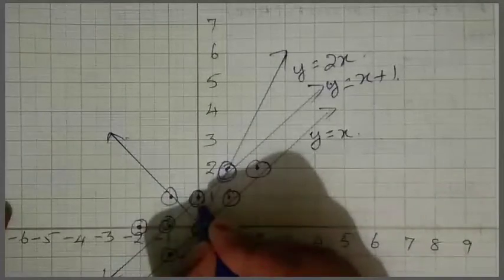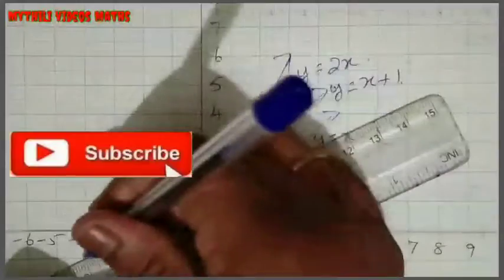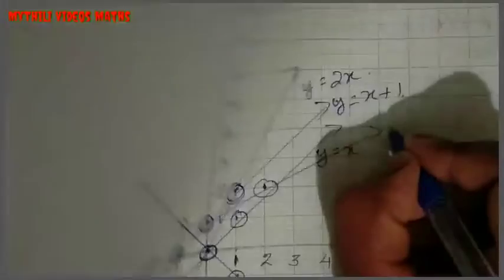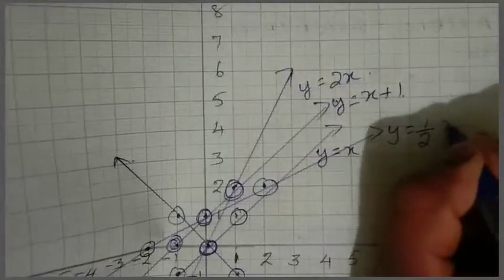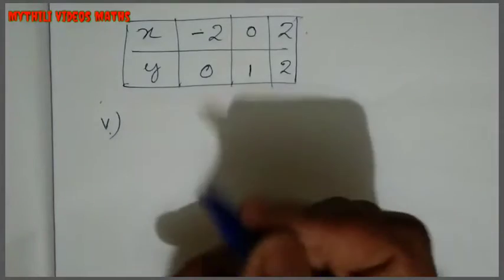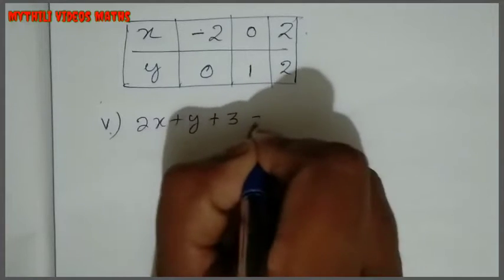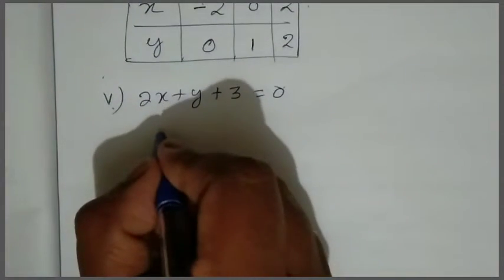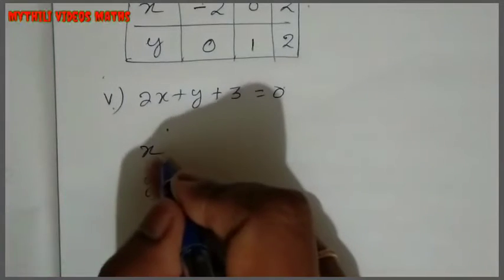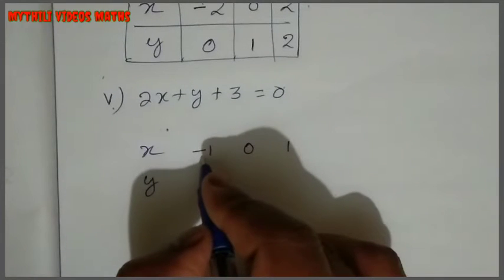When marking the points you may get confused — use a graph sheet, not plain paper. You will be able to do it. So y = ½x + 1 is done. Now the 5th subdivision: 2x + y + 3 = 0. First, rearrange this equation. Here we set up the x-y table.